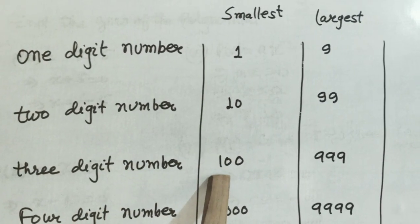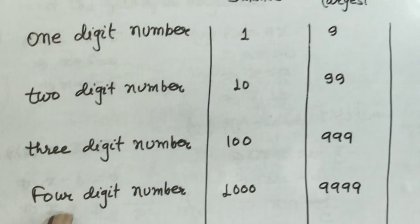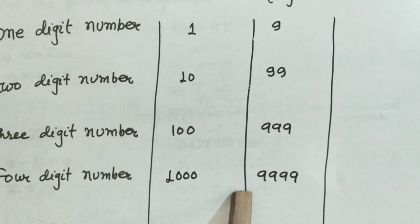Three digit number: smallest one is 100, largest one is 999. Four digit number: smallest one is 1000, largest one is 9999.